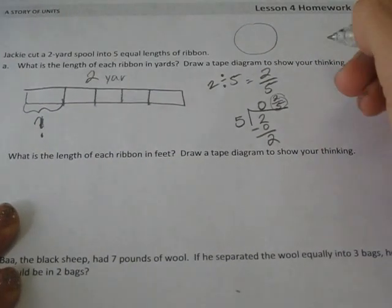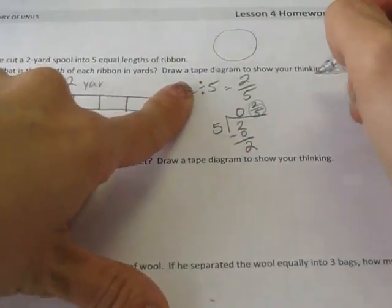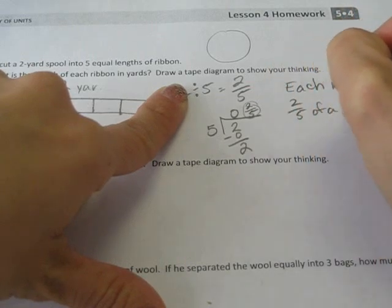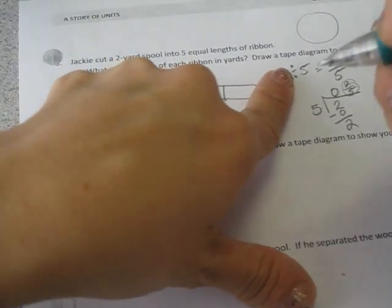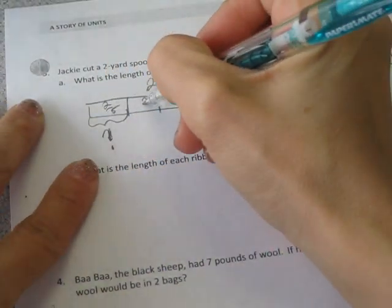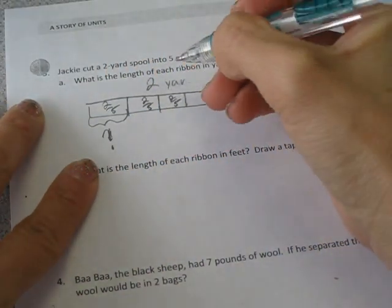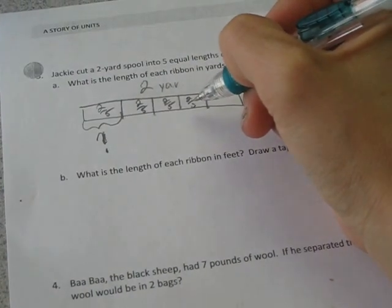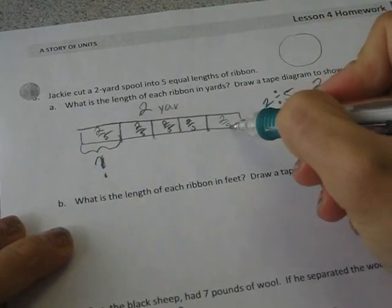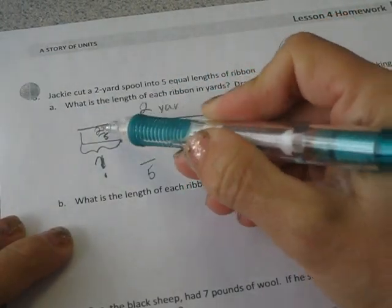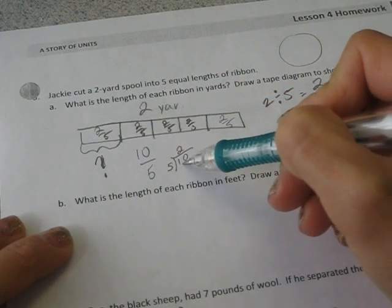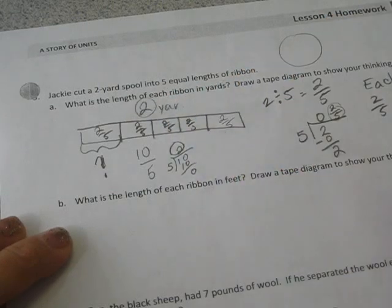So it holds. What is the length of each ribbon in yards? Each ribbon is 2 fifths of a yard. And I can double check my work if each one of these is 2 fifths. So if each one was 2 fifths and I added them up, my denominator would be 5, 2, 4, 6, 8, 10. And 10 divided by 5 is 2. And that's correct. So my answer is correct.